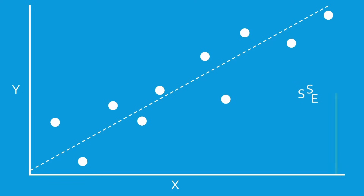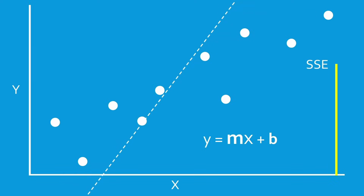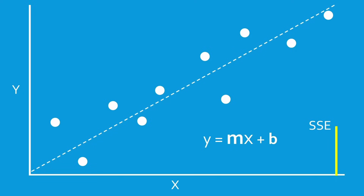One way to think of least squares is as an optimization problem. The sum of squared errors is the objective function, and the optimizer is trying to find the slope and intercept of the line that best minimizes the error.